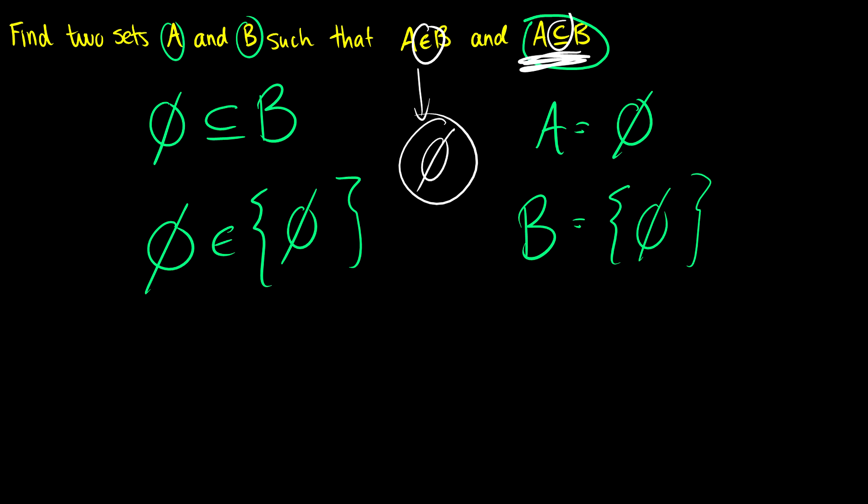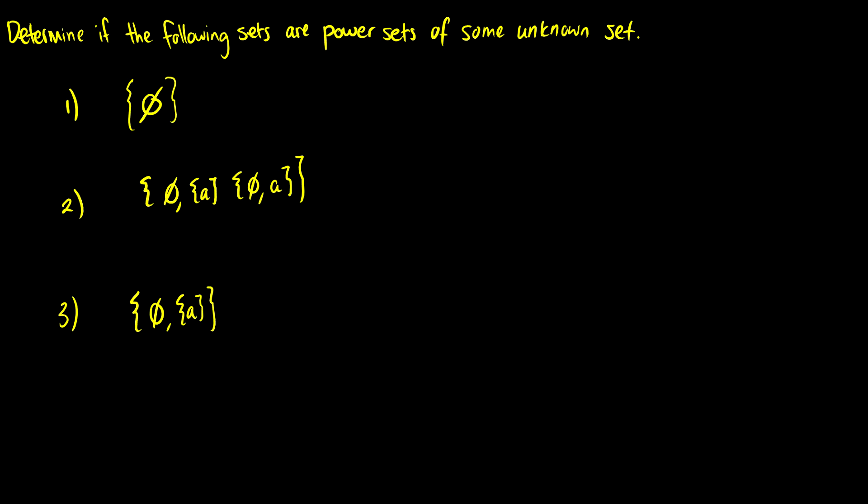Okay second question. Determine if the following sets are power sets of some unknown set. So I'm giving you a set that looks like a power set and you have to tell me if it is a power set or not. First question: we have the set containing the empty set. So this has two to the zero elements which is equal to one. So this is potentially a power set.